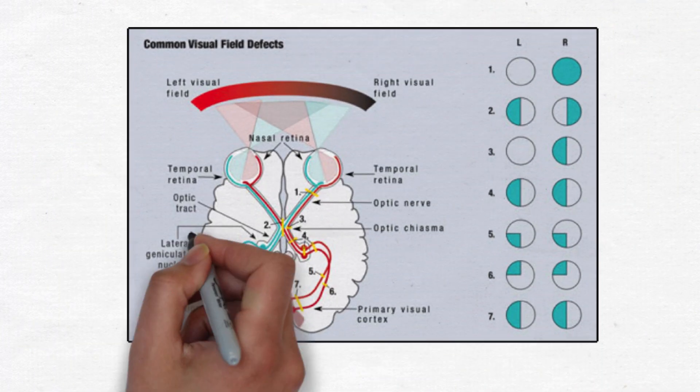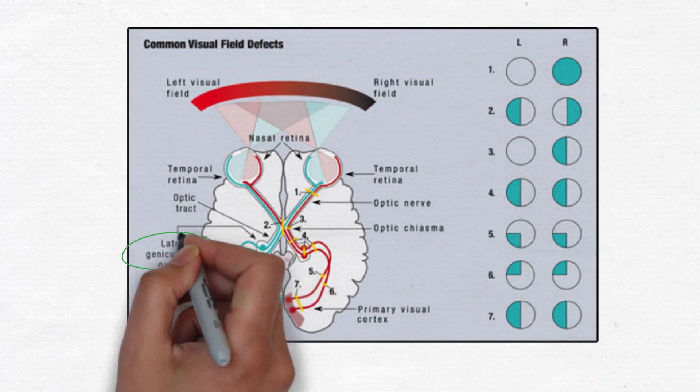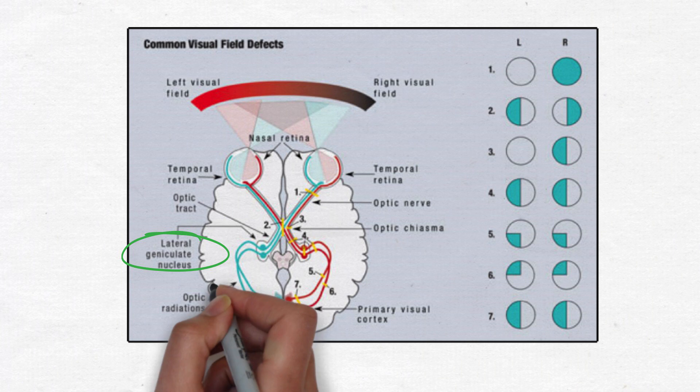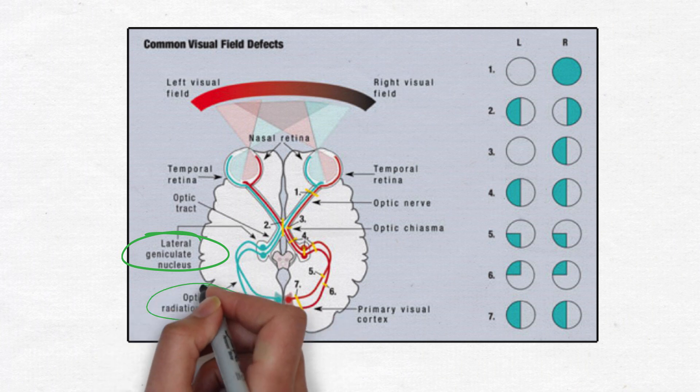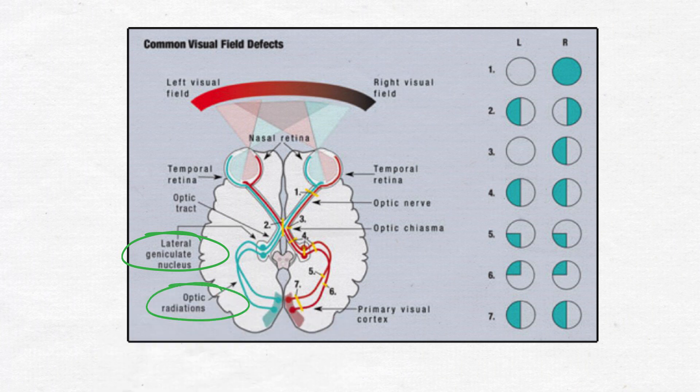After synapsing in the lateral geniculate nucleus, the optic radiations project to the occipital lobes.